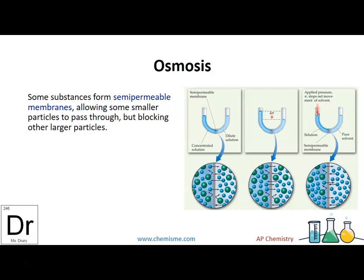Substances have semipermeable membranes, allowing some smaller particles to pass through but blocking larger particles. Think of your skin — it allows lotions and oils through, but doesn't allow more solid-type particles. Looking at this diagram, there's a semipermeable membrane that allows only certain particles through. On the left side is a concentrated solution, shown as darker, and on the right side is a dilute solution. Over time, particles start to move through the barrier — what's actually moving through is the solvent.